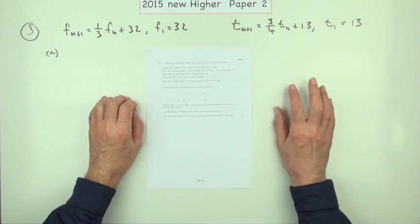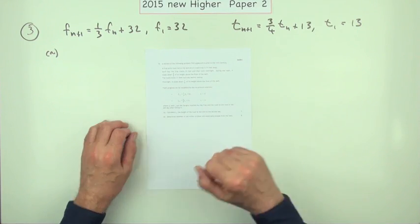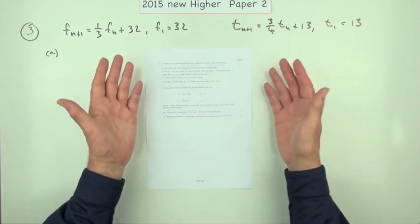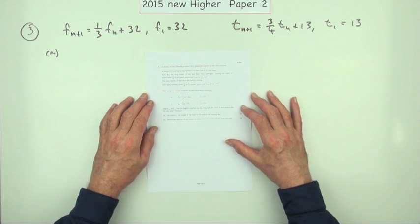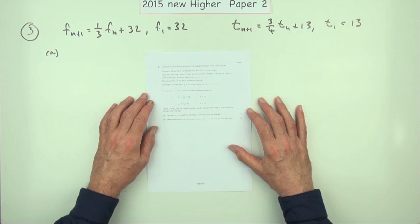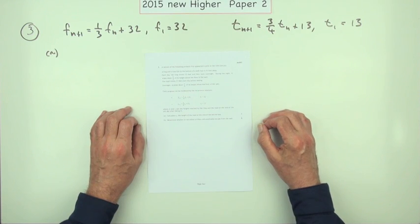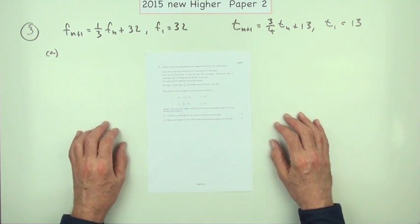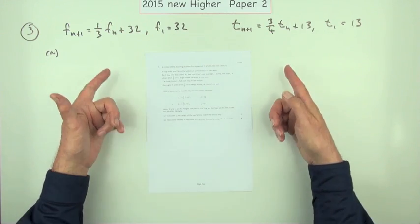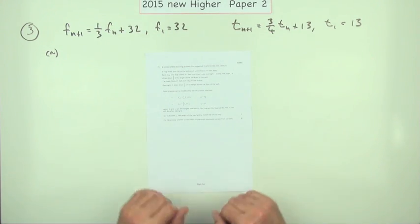Question 3 from paper 2 of the 2015 new higher, the recurrence relation question. Really quite straightforward. Don't know why there was confusion. If you want confusion, look at the marking scheme - it's actually best ignored if you want to find some reference as to how these questions would be marked in the future.